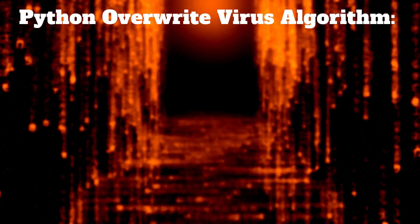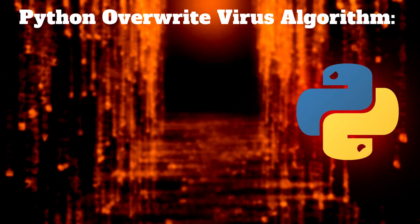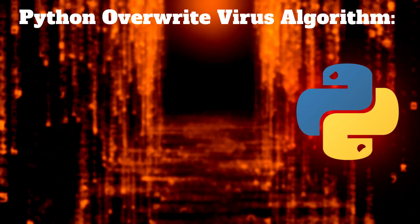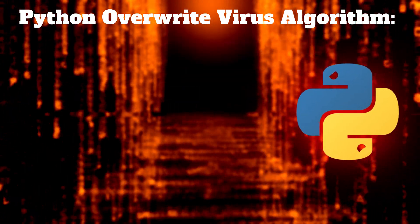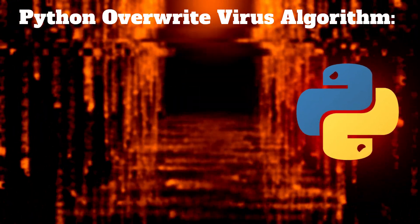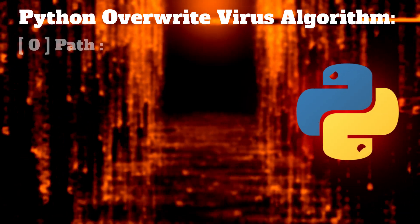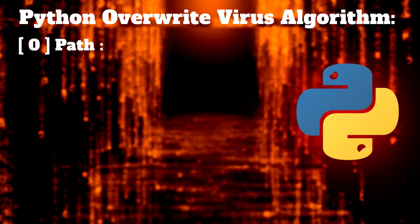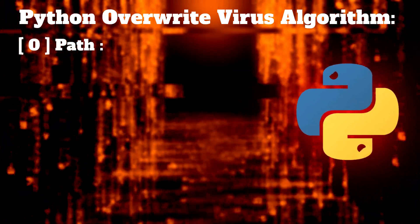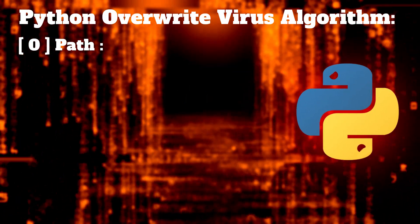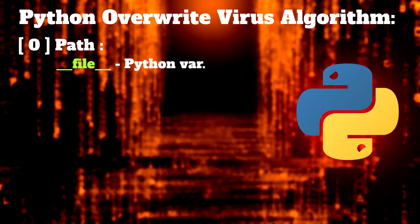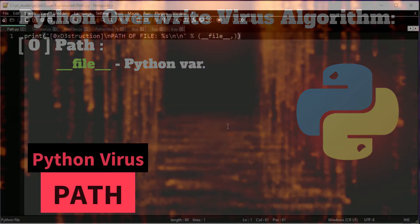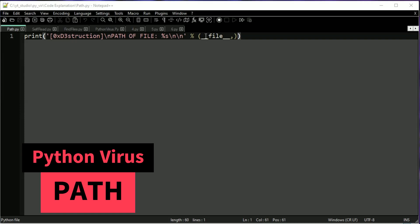4th part of Override Viruses. As you guessed, the algorithm doesn't change this time. First, path of file. To get the file path, we have to use the __file__ variable from Python. Under __file__, we have the path to the currently running script, like in this example.